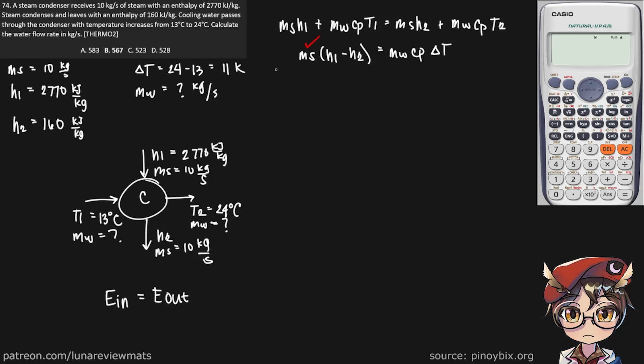Now we do have this. We have the enthalpy of the steam. We are trying to look for this. We know the specific heat of water and we know the temperature difference. So now this becomes a simple case of direct substitution.